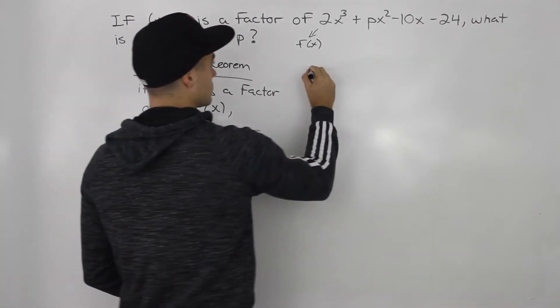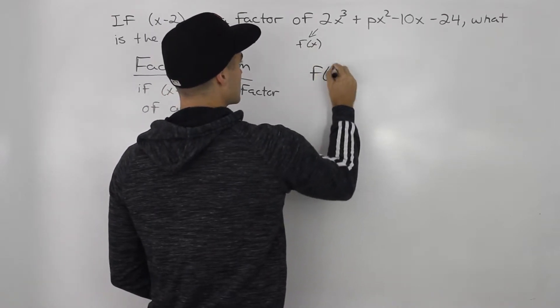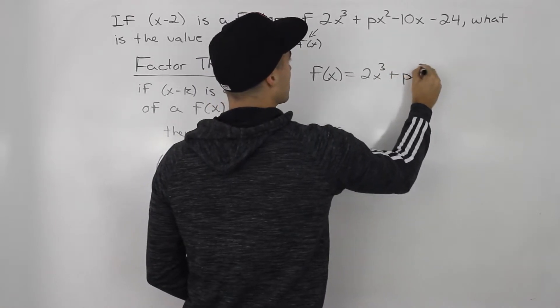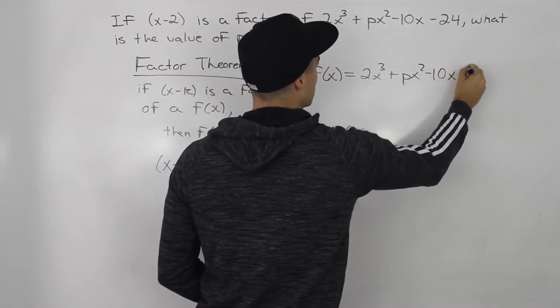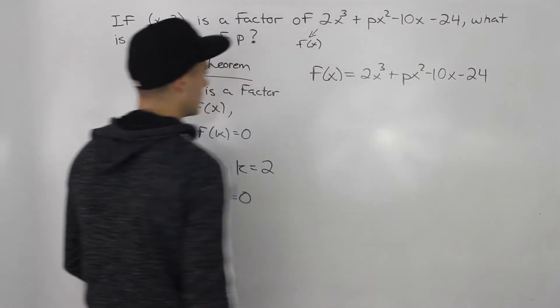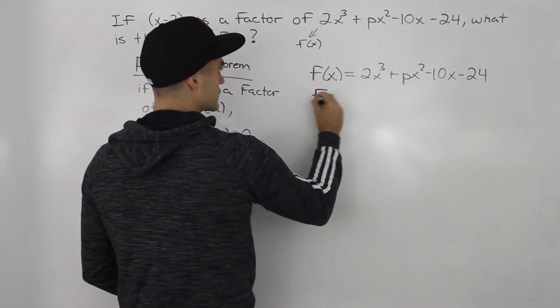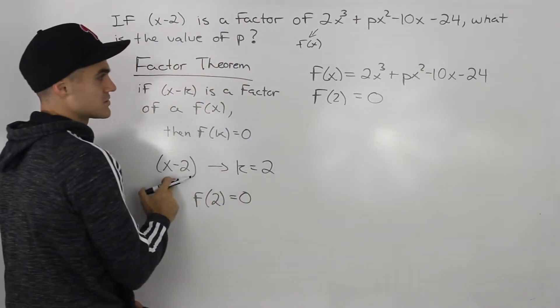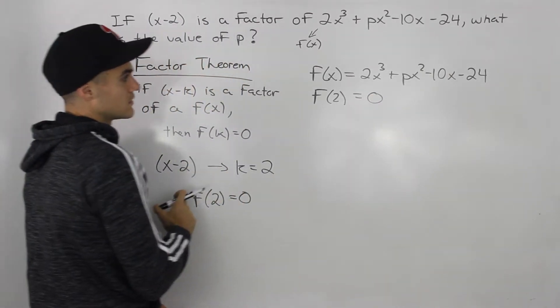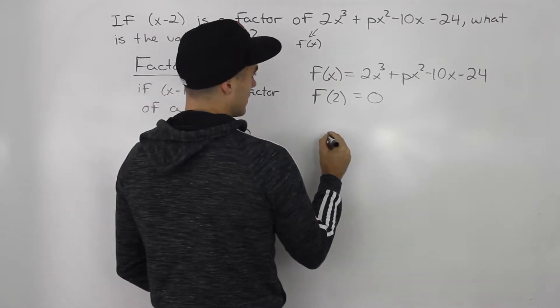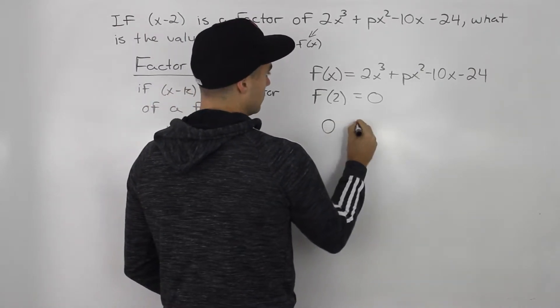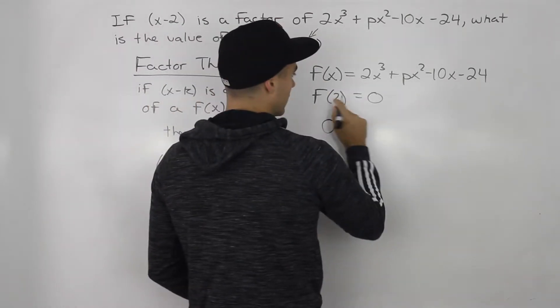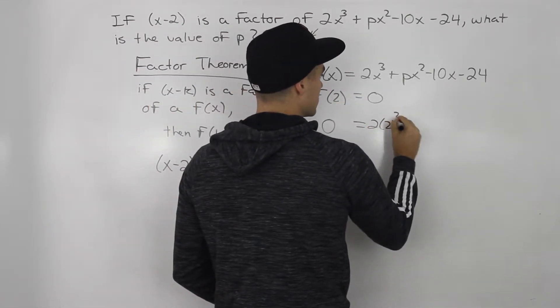All right, so let's do this up here. So f of x is 2x cubed plus px squared minus 10x minus 24. So that means that f of 2 is equal to 0 since x minus 2 is a factor. So the way we can set up this equation is we can have 0 for the y value, and then we can plug in 2 for all of the x values.